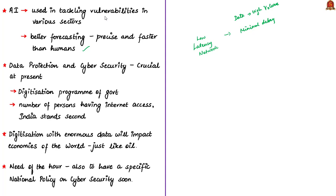The union cabinet is yet to take up the draft policy prepared by Niti Aayog on both artificial intelligence and cyber security. At a seminar, a Niti Aayog member stated that data protection and cyber security are very crucial at present due to the promotion of digitization by the Indian government. In terms of persons having internet access, India stands second in the world. Even at the global level, a data protection and regulation framework is under discussion. Digitization has brought enormous data that will impact economies of the world just like the oil sector.